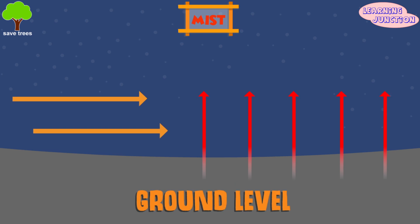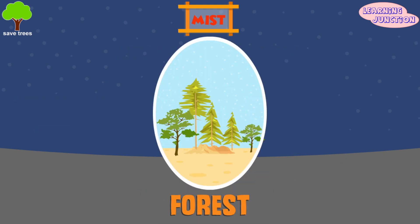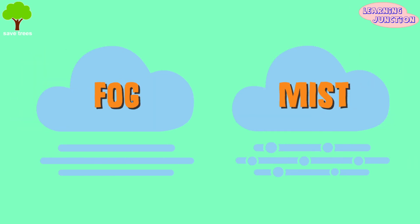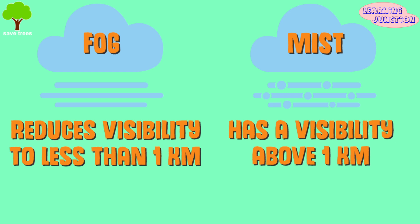Mist. Mist is very small droplets of water hanging in the air. These tiny droplets form when hot water vapor in the air is rapidly cooled, causing it to convert from invisible gas to tiny visible droplets of water. Mist is more common in forest regions and mountain regions. Fog and mist differ by how far we can see through them. Fog is when you can easily see less than one kilometer away, and if you can view further than one kilometer, it is mist.